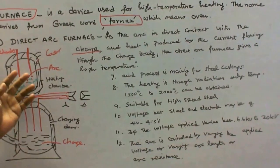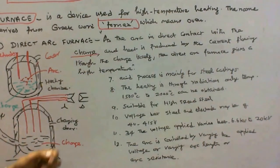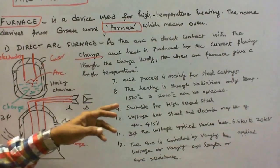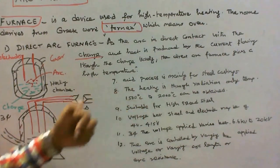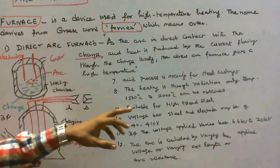In this furnace, acid process is mainly for steel castings. The heating is through radiation only. Temperature of 1500 degree centigrade to 2000 degree centigrade can be obtained. This furnace is suitable for high speed steel which are used for tool bits.